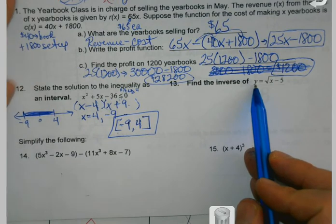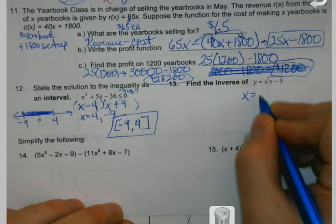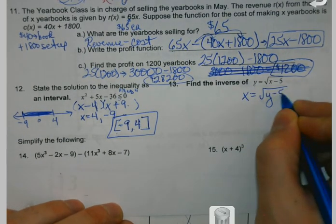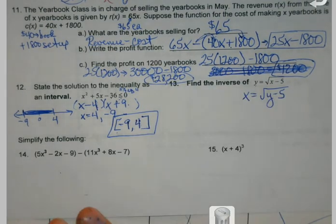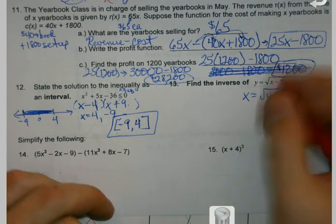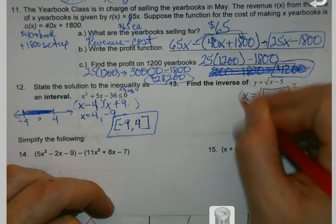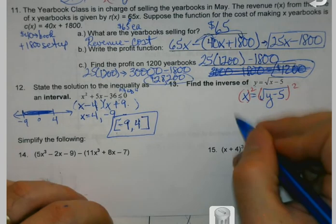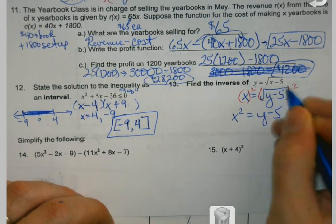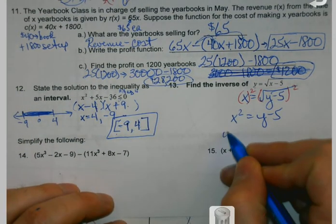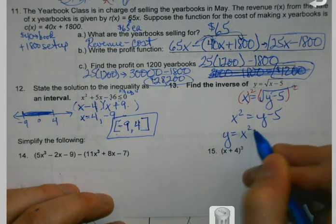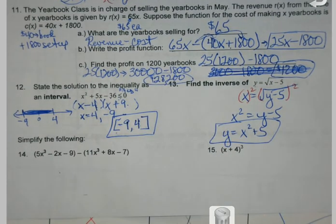Another inverse similar to 10. Switcheroo the x and the y. What should I do next on 13? Square both sides. Okay. No plus minus. It's not a quadratic we're working with. It's a square root function. Then just add the 5 over. And that one's good.